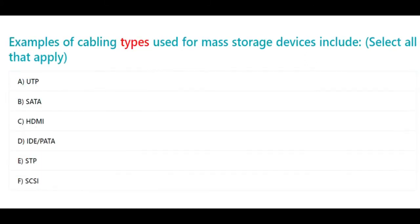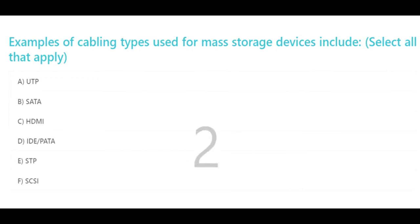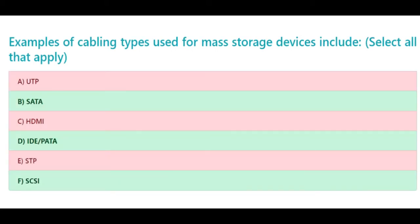Examples of cabling types used for mass storage devices include — select all that apply: a. UTP, b. SATA, c. HDMI, d. IDE/PATA, e. STP, f. SCSI. The correct answers are b. SATA, d. IDE/PATA, and f. SCSI.